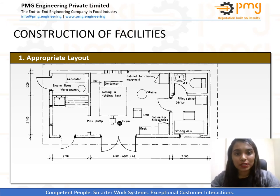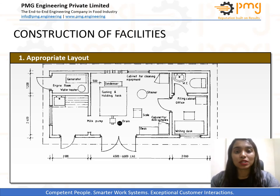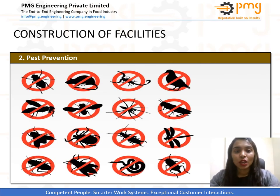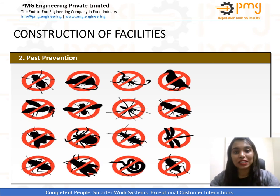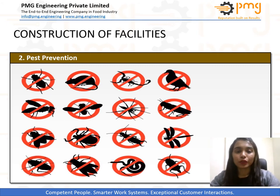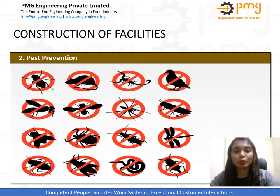To accommodate possible increases in processing activity in the future, the building and its food processing support systems should be designed so they can either be expanded or so that additional buildings and utilities can be added. For pest prevention, to exclude flooding and the entry of rodents, the factory should be built at a higher level than the outside ground, with no exterior doors opening directly into the production area or in receiving and dispatch areas. The number of loading docks should be minimal and be 1 to 1.2 meters above ground level, with areas beneath docks paved and properly drained to prevent harborage for pests. Dock openings should be protected with plastic strip curtains or air curtains.